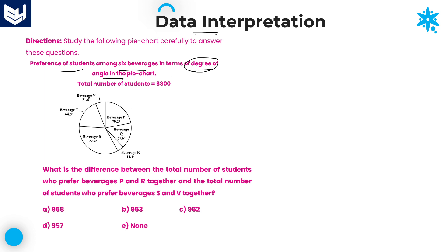If you observe carefully, the information regarding students is given in terms of degrees for six beverages. The calculation of degrees to percentage I already explained in previous sessions. First, before going to the entire process, convert each and every degree value into percentage so that the calculation will be easy. One more piece of information given: the total number of students is 6,800. So our first and foremost task is to convert each beverage's degrees into percentage.